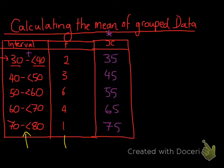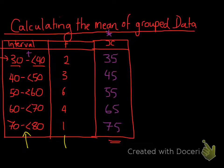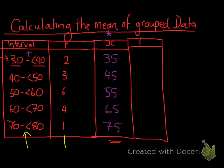We know that calculating the mean involves adding up all of our data values and dividing by however many there are. We could add up all the class centres individually — 35 plus 35 plus 45 plus 45 plus 45, and so on — but we can take a shortcut by drawing another column called f times x. Because we have the same data value repeated, we don't need to add them all up individually.